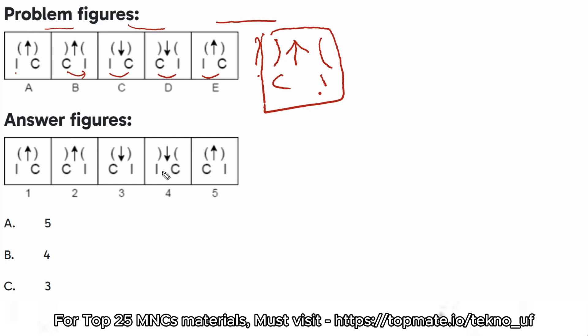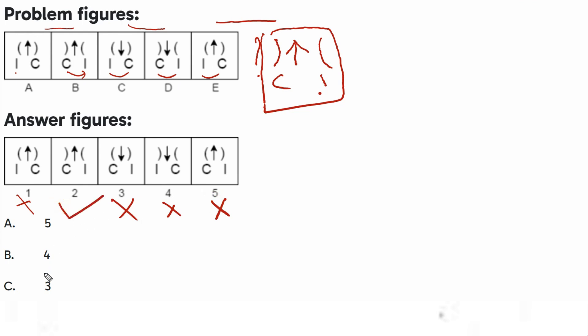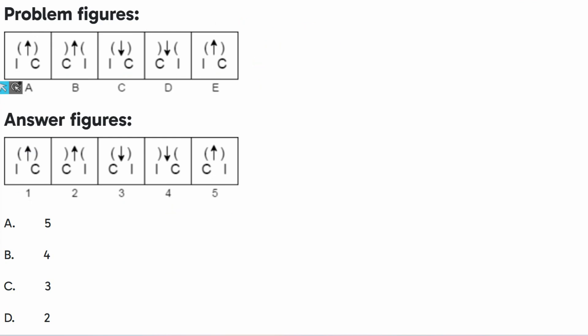The bracket should be 180-degree shifted and the I-C value should follow the alternating pattern. Options with the arrow pointing downward are eliminated. Options where C is on the right side are also eliminated. Options where the bracket is on the same side are eliminated as well. That leaves option 2, which is option D, as the correct answer. If you want me to upload more content or part two, or Deloitte or Accenture content, please comment and I'll upload it in advance.